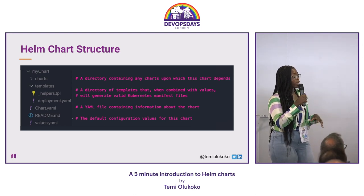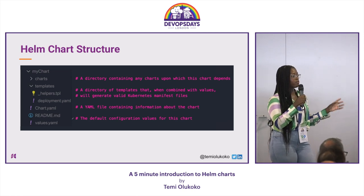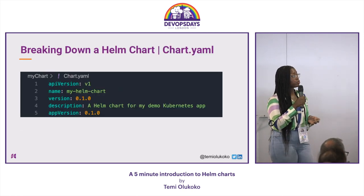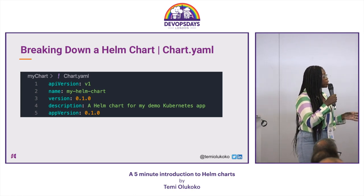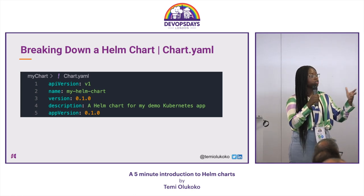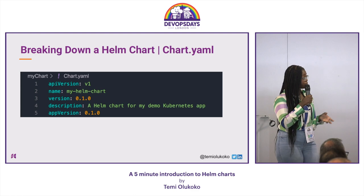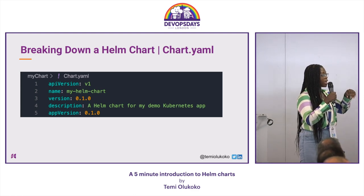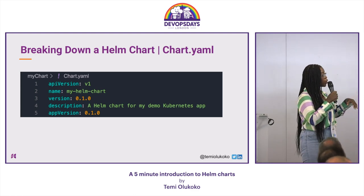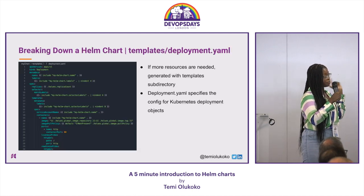Let's take a look at the structure of a very simple chart YAML file. This essentially describes what our software package is about. The three most important bits here are your API version, your name, and the version.